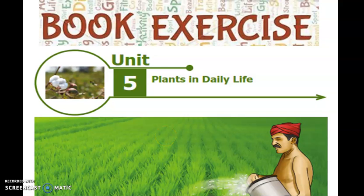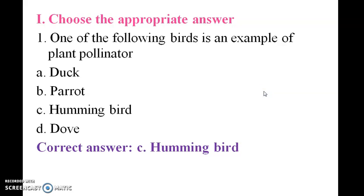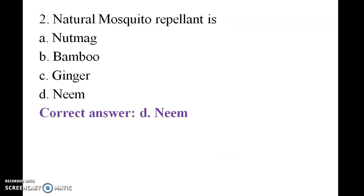Good morning students. Let us see the book exercise of Unit 5: Plants in Daily Life. First, choose the best answer. Which of the following is an example of a plant pollinator: duck, parrot, or hummingbird? The answer is hummingbird. Which is a natural mosquito repellent: nut, mac, bamboo, or ginger? The answer is neem.